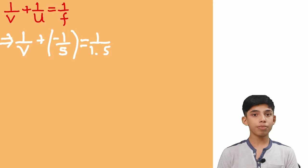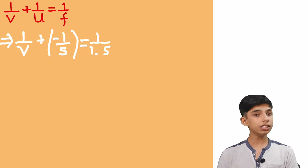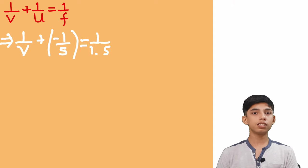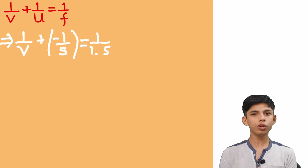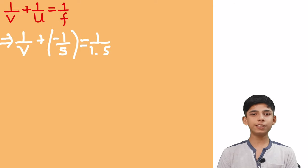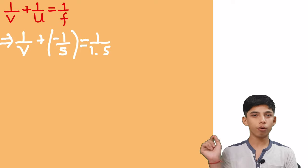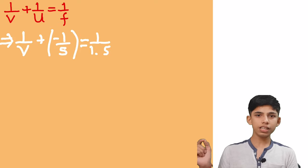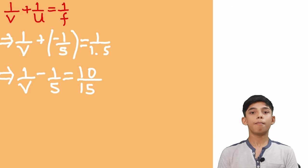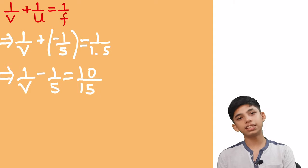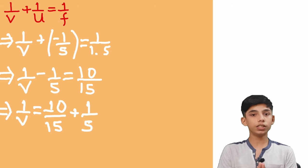So we have 1 by V plus and then minus 1 by 5 gives us 1 by 1.5, great. Now before doing further calculation, let's remove that decimal of our focus here. So what we will get after doing this? Yes, 10 by 15.